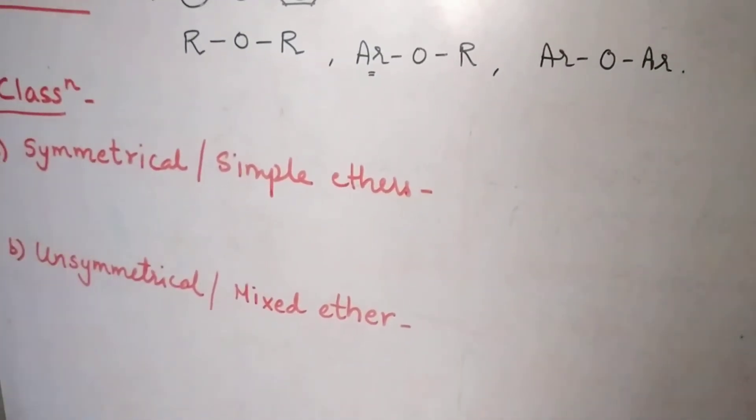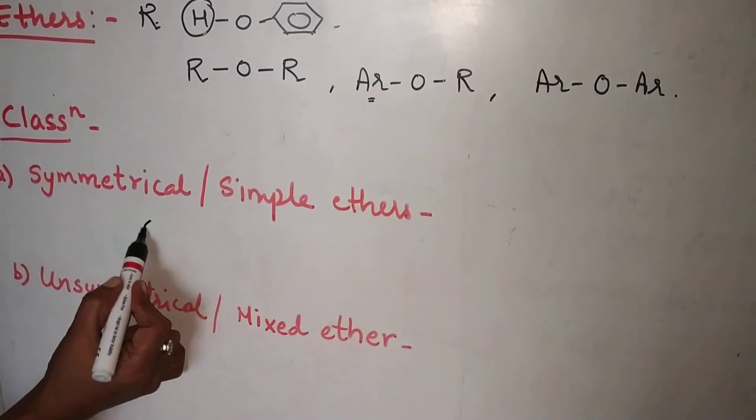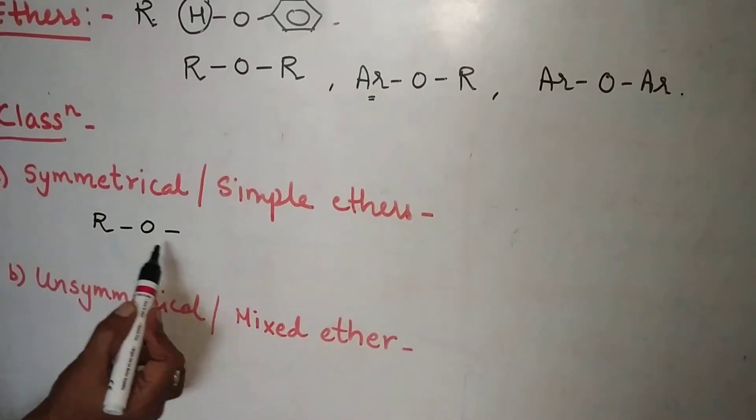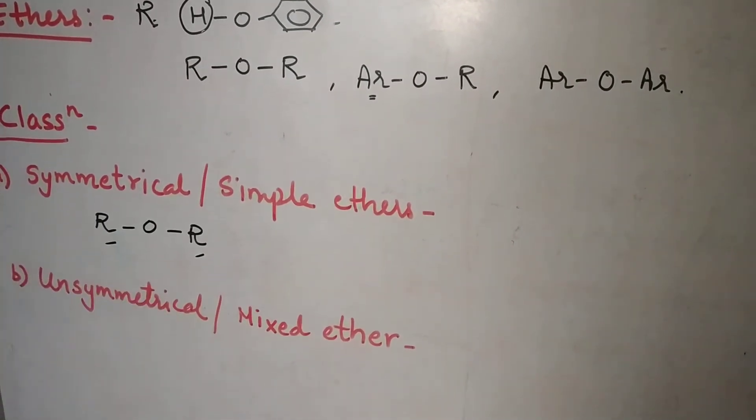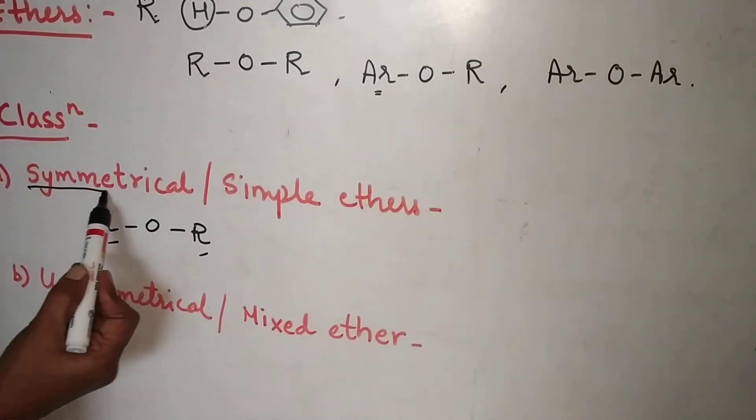What are simple and symmetrical ethers? Simple or symmetrical, the meaning is oxygen atom carries two groups which are same. Those are said to be simple or symmetrical. The word symmetrical indicates same.